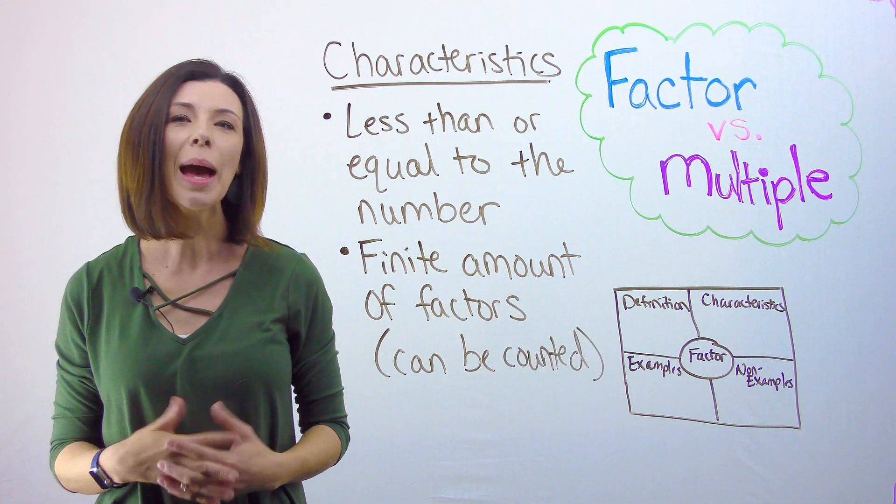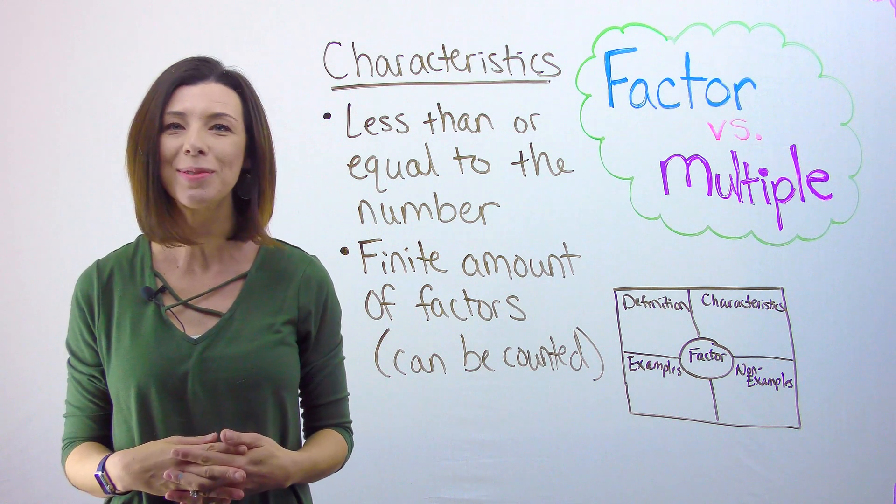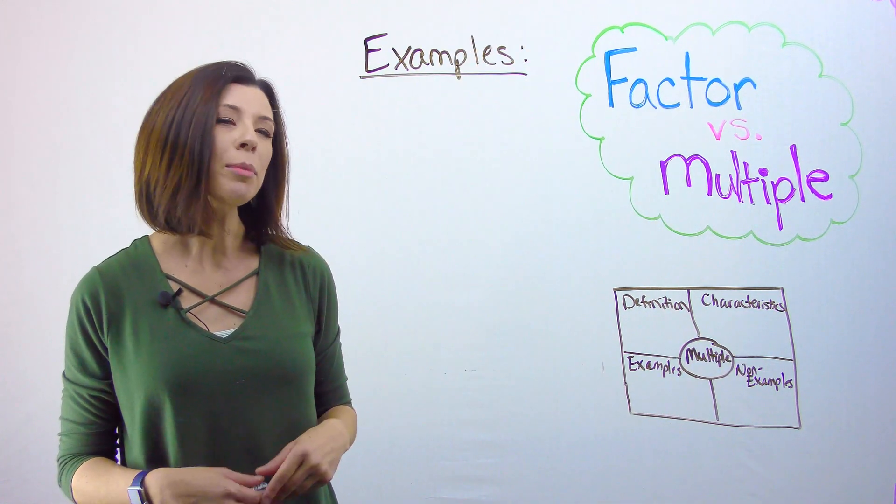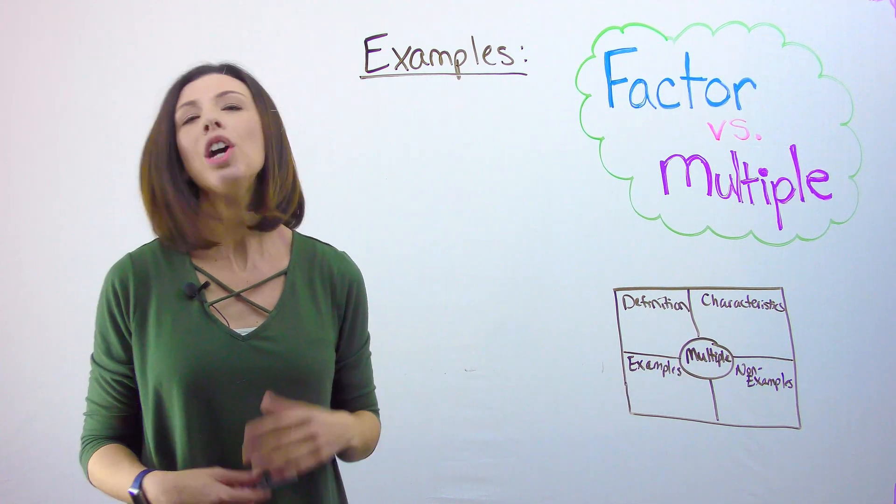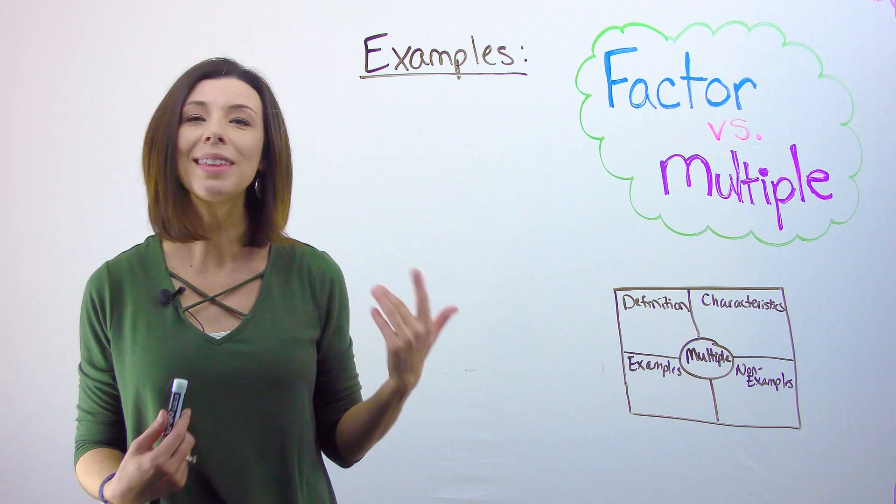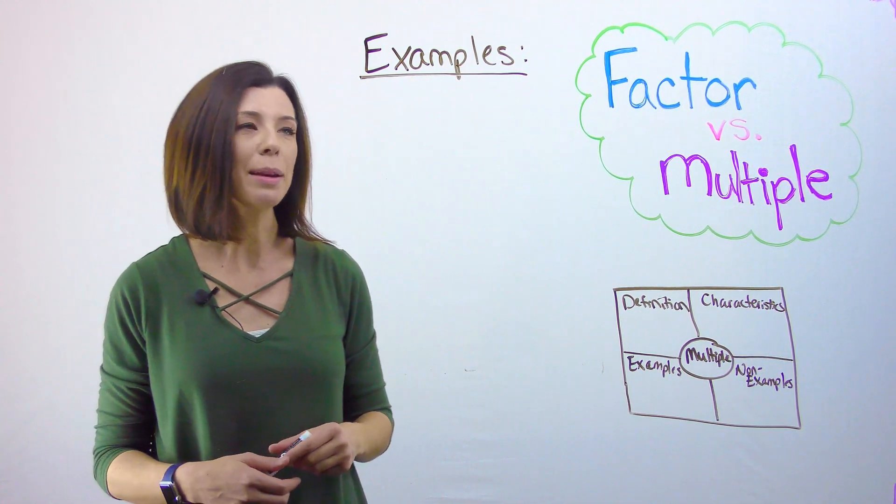Now let's take a look at multiples and compare the two. You'll notice that for multiples, I've got a new Frayer model and multiple is written in the middle. Just like we did for factors, we're going to start with the examples and non-examples.